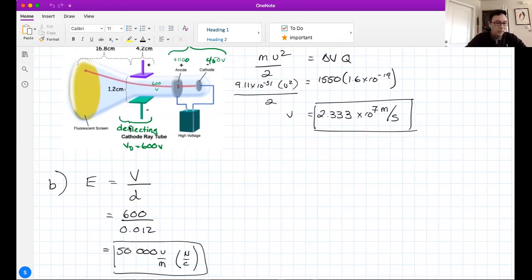Part C: find the transverse acceleration of the electrons between the deflecting plates. If we're going to find acceleration, that's F net equals MA. I need to know the force that's causing the acceleration first. The force comes from this equation: electric field strength equals force over charge. We already know the electric field strength is 50,000. We know the charge on an electron is 1.6 × 10⁻¹⁹. Find the force.